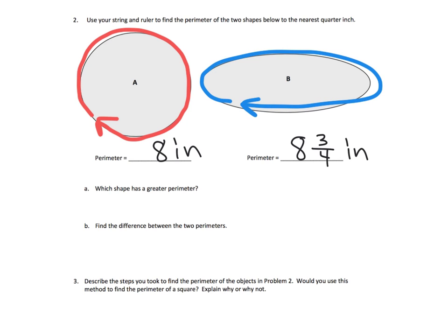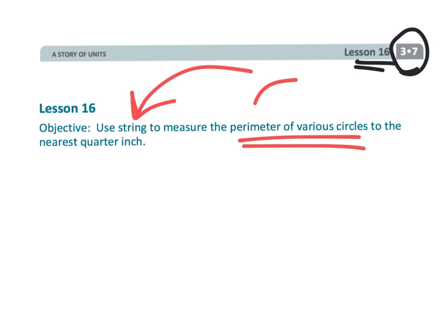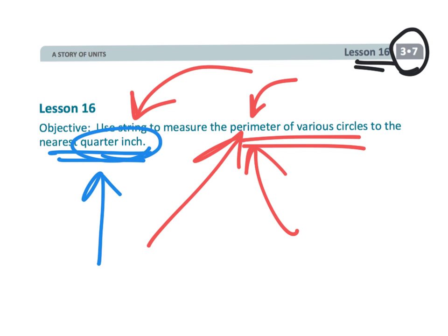That wraps up this short, simple, and fun third grade module 7, lesson 16 - using string to measure the distance around circles. It's called perimeter, but also called circumference. Really, all of this is just to reinforce the meaning of perimeter and give us another chance to practice measuring with rulers, so we're also practicing fractions.